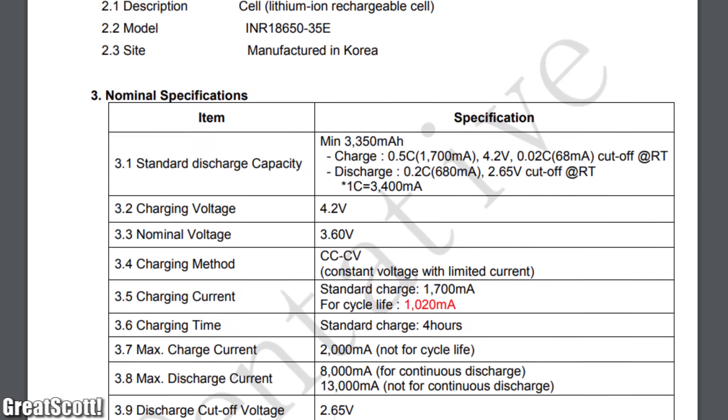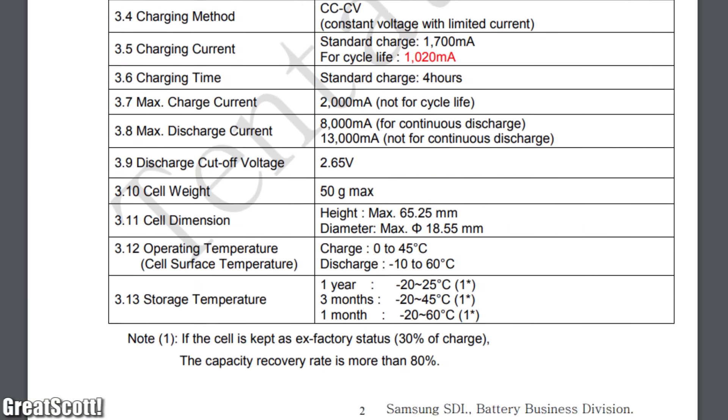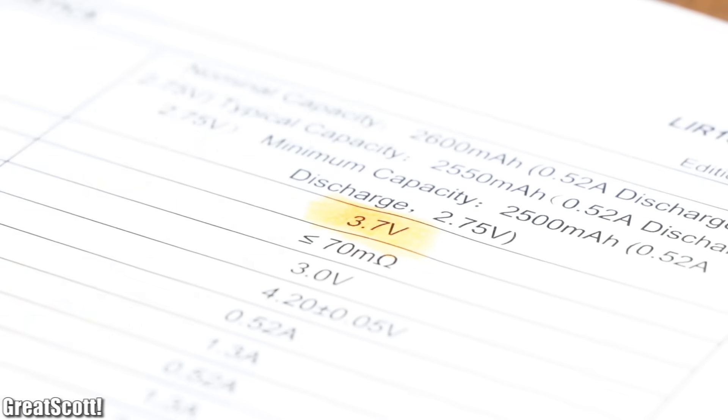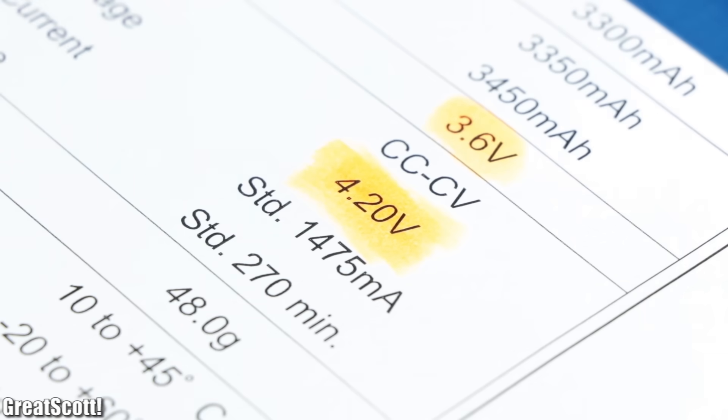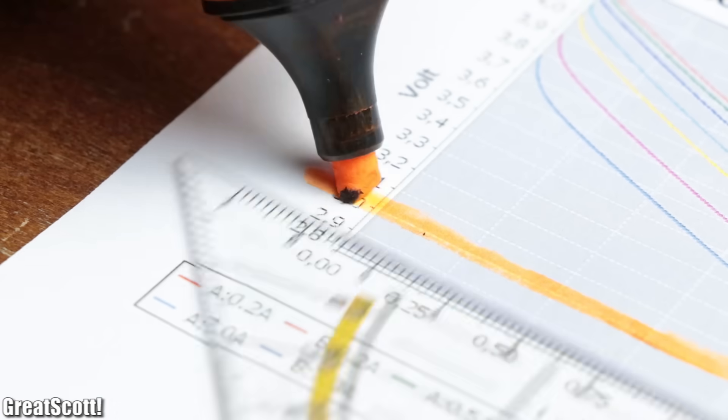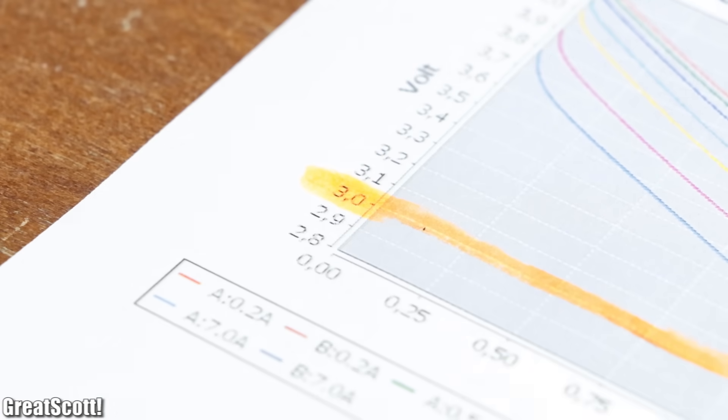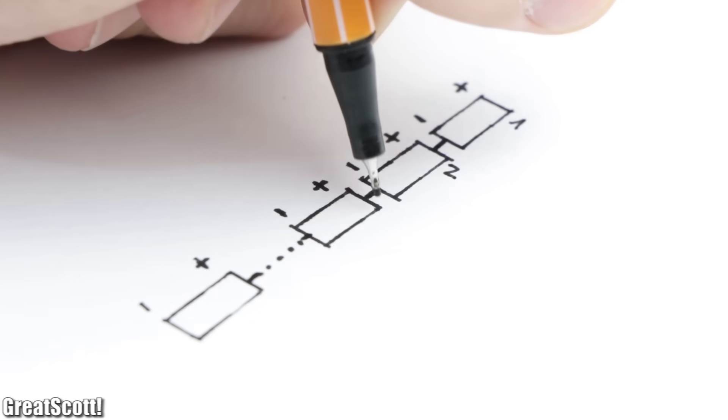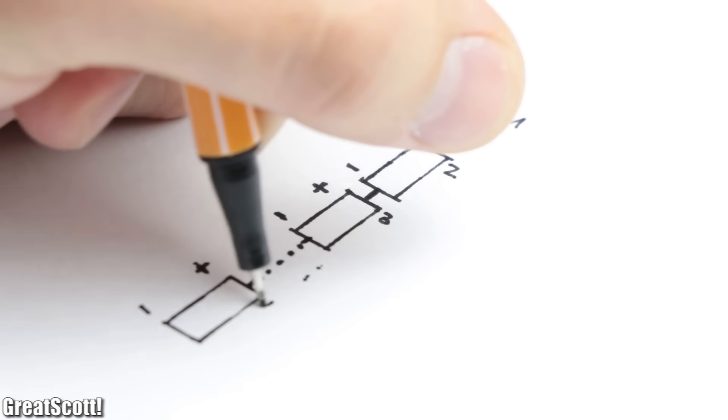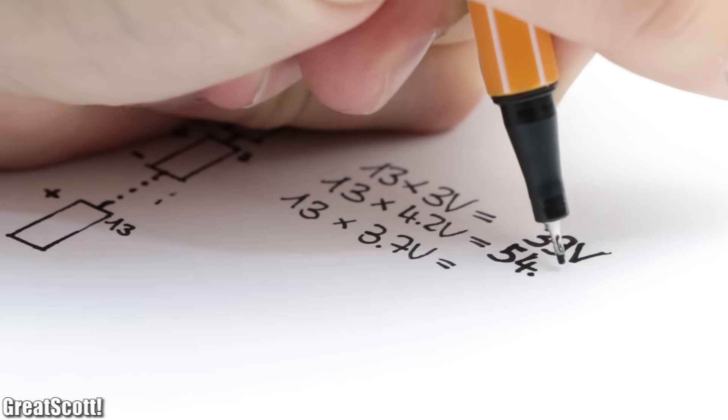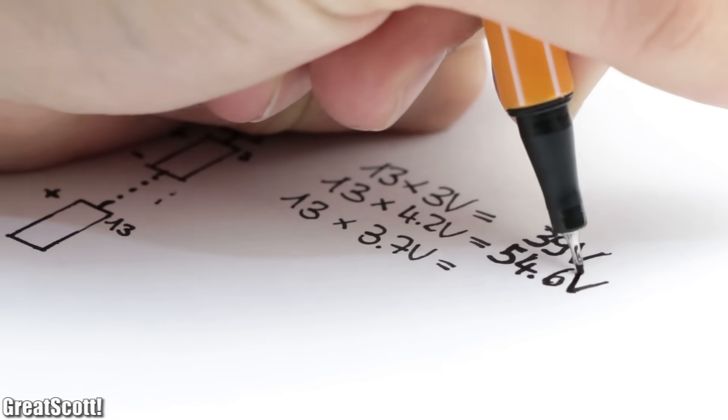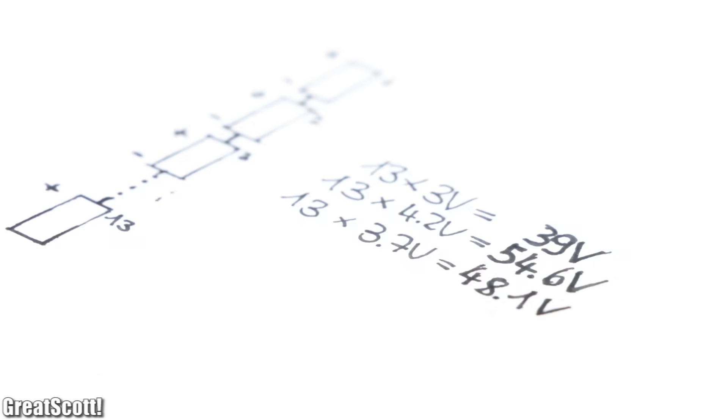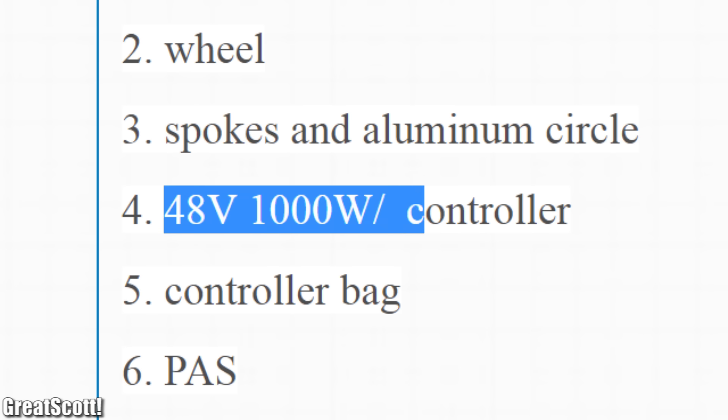When inspecting the data sheet of most lithium-ion cells, we can find out that they got a nominal voltage of 3.6 to 3.7 volts, a maximum charging voltage of 4.2 volts, and have almost no capacity left when they got discharged to 3 volts. That means we got a voltage range of 3 volts to 4.2 volts per cell. Thus for our controller voltage range, it would make sense to put 13 cells in series to create a battery voltage range of 39 volts to 54.6 volts with a nominal voltage of around 48.1 volts, which not surprisingly is the advised voltage of the controller.